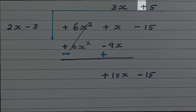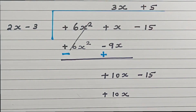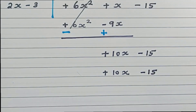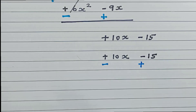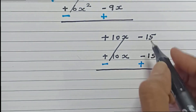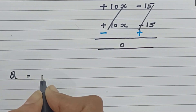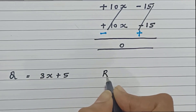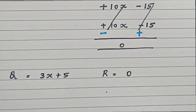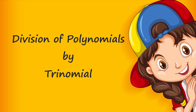Multiply the quotient 5 with each term of the divisor: 2x times 5 gives us plus 10x, and minus 3 times 5 gives us minus 15. Now change symbols and subtract: plus 10x becomes minus 10x, and minus 15 becomes plus 15. So plus 10x minus 10x cancels, and minus 15 plus 15 also cancels. Our remainder is 0. Therefore, the quotient is 3x plus 5 and the remainder is 0. Final answer: 6x squared plus x minus 15 divided by 2x minus 3 equals 3x plus 5. Now let's learn how to divide a polynomial by a trinomial.